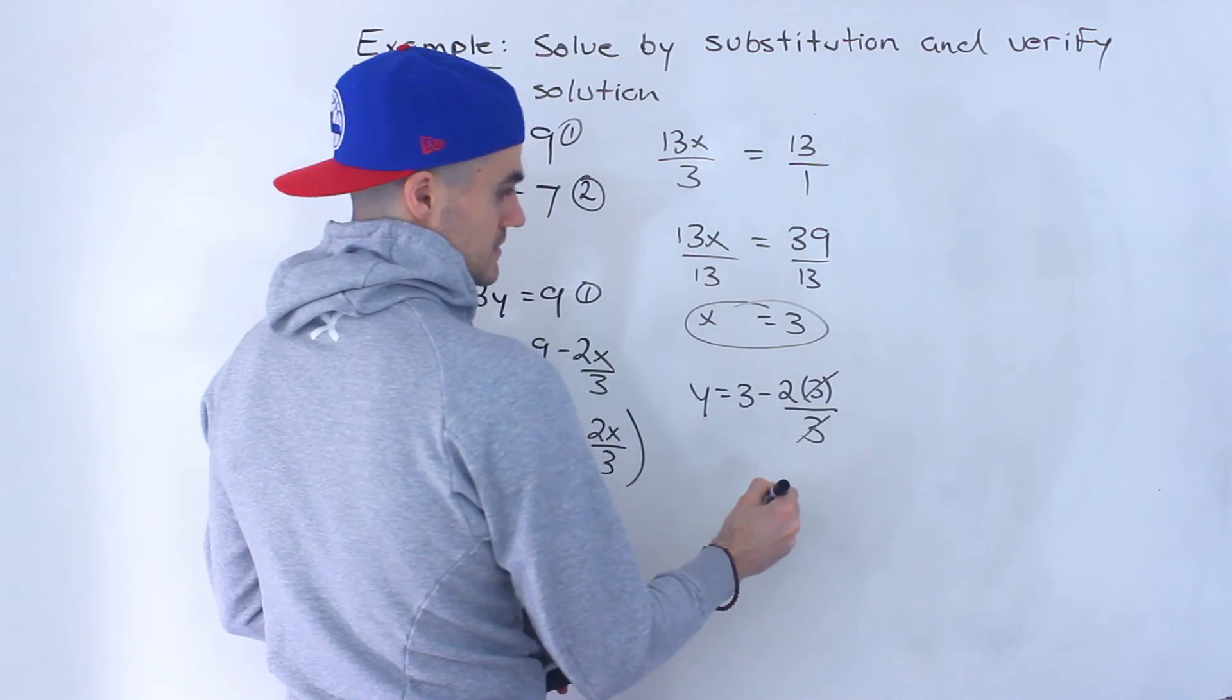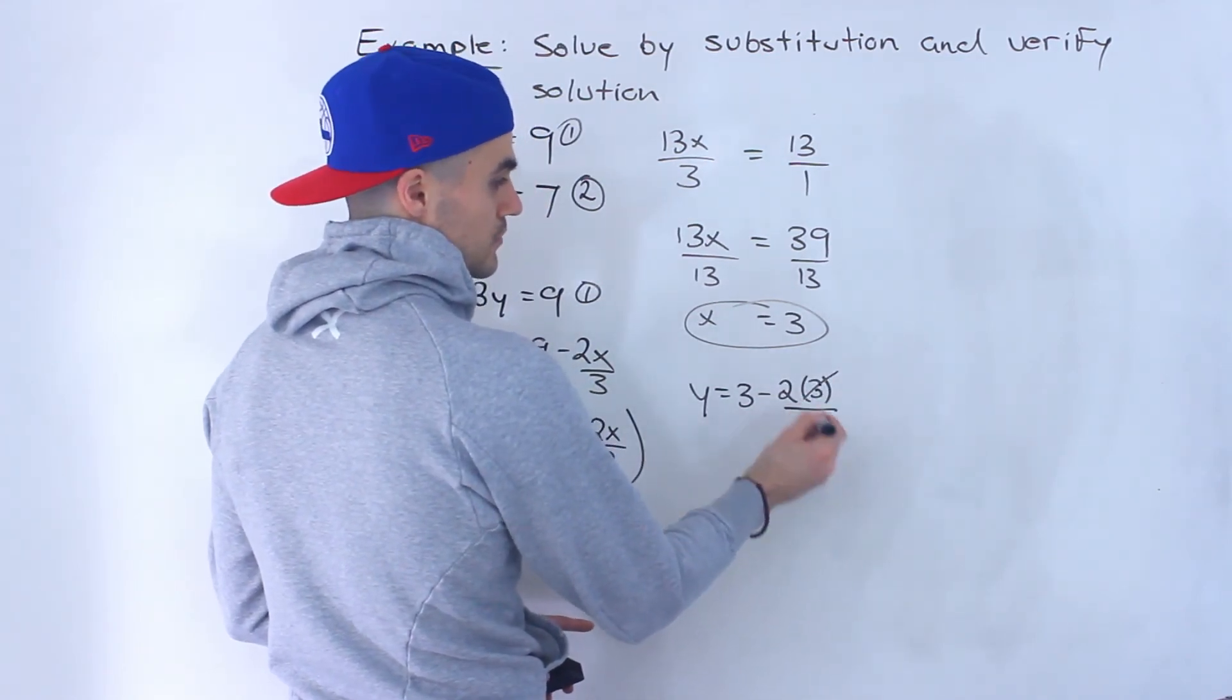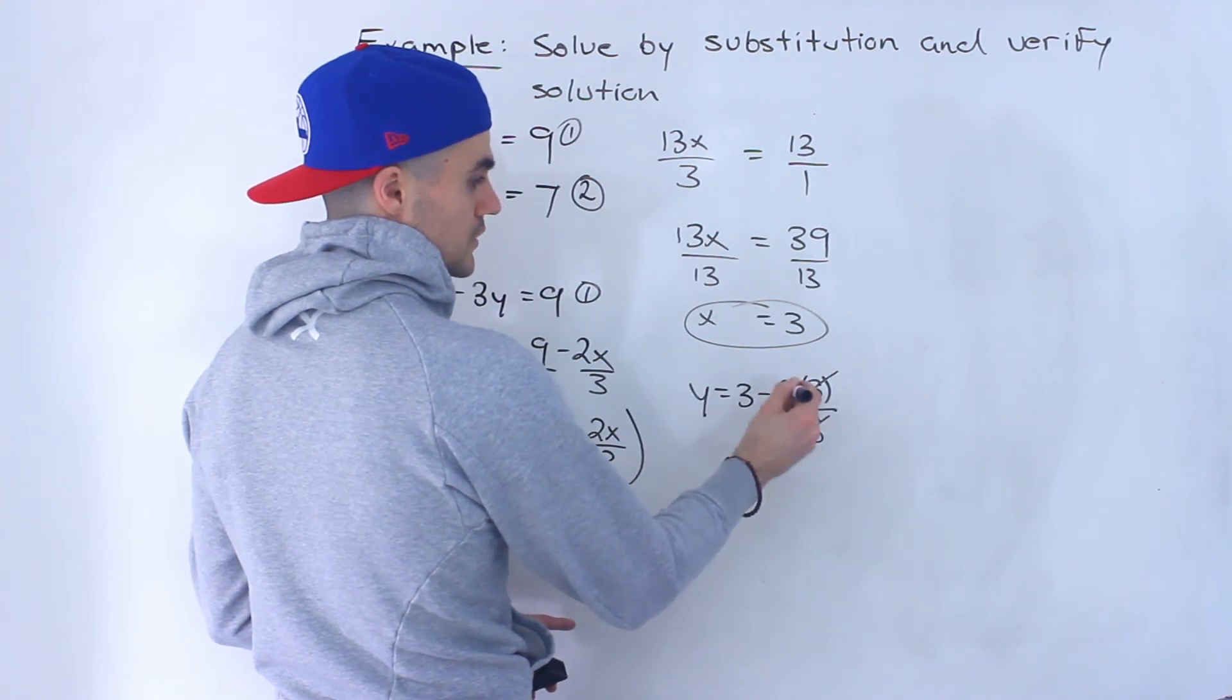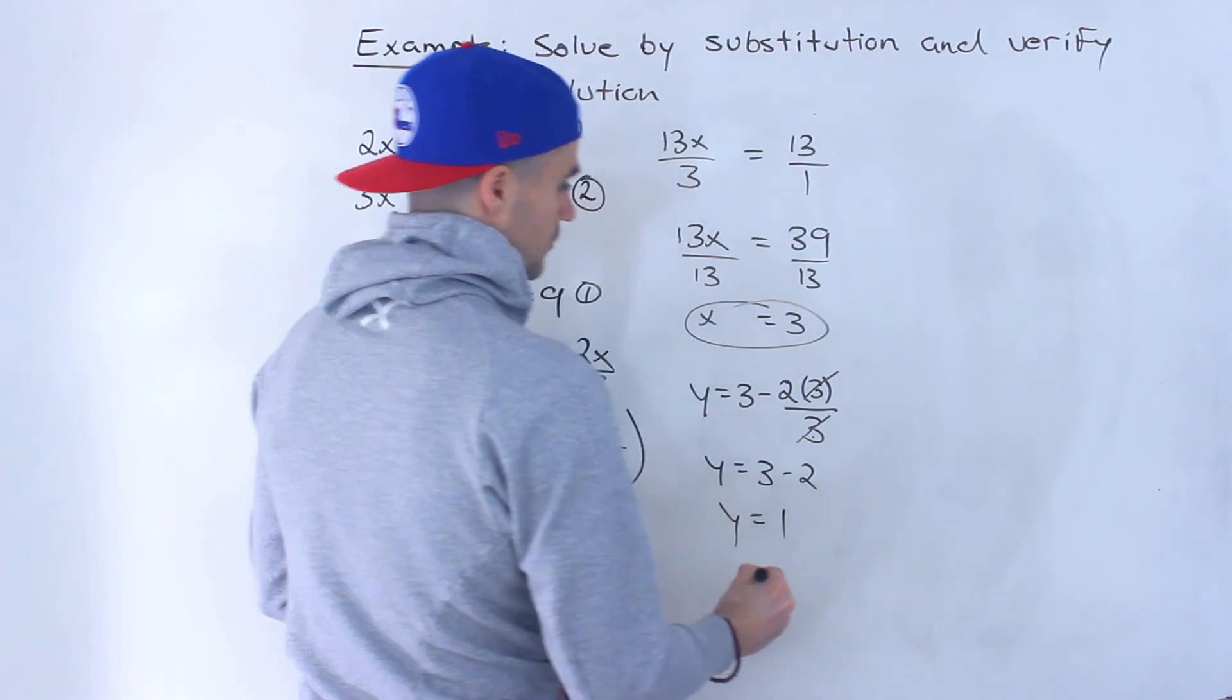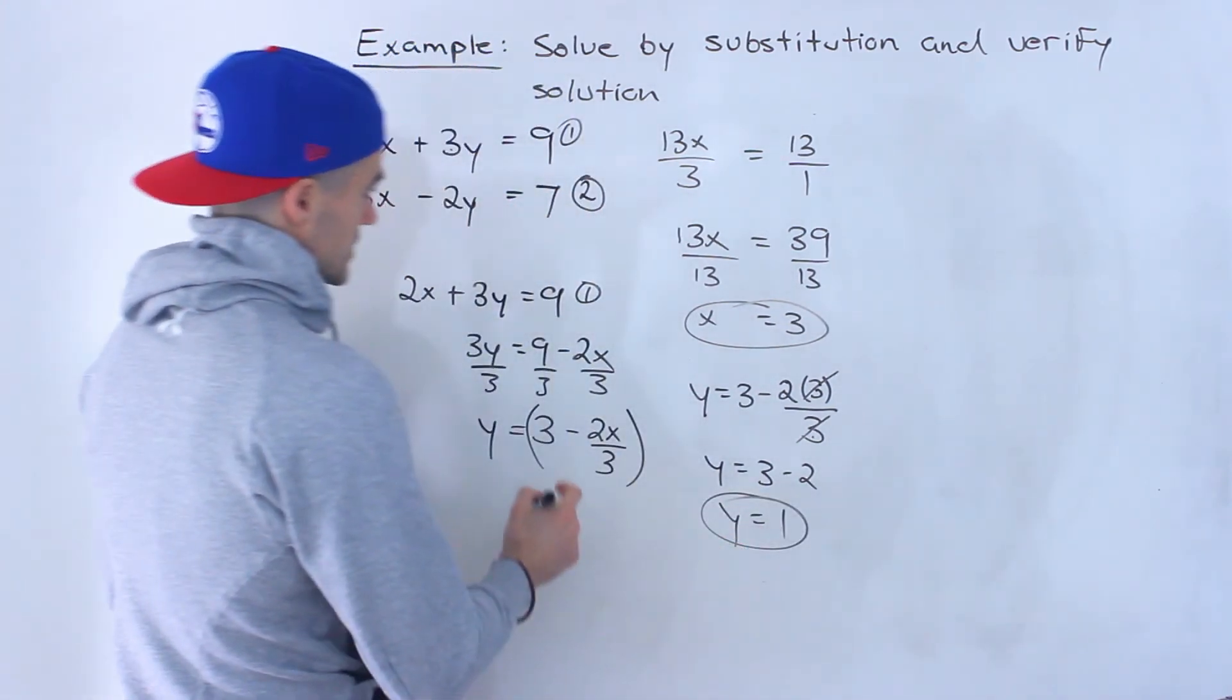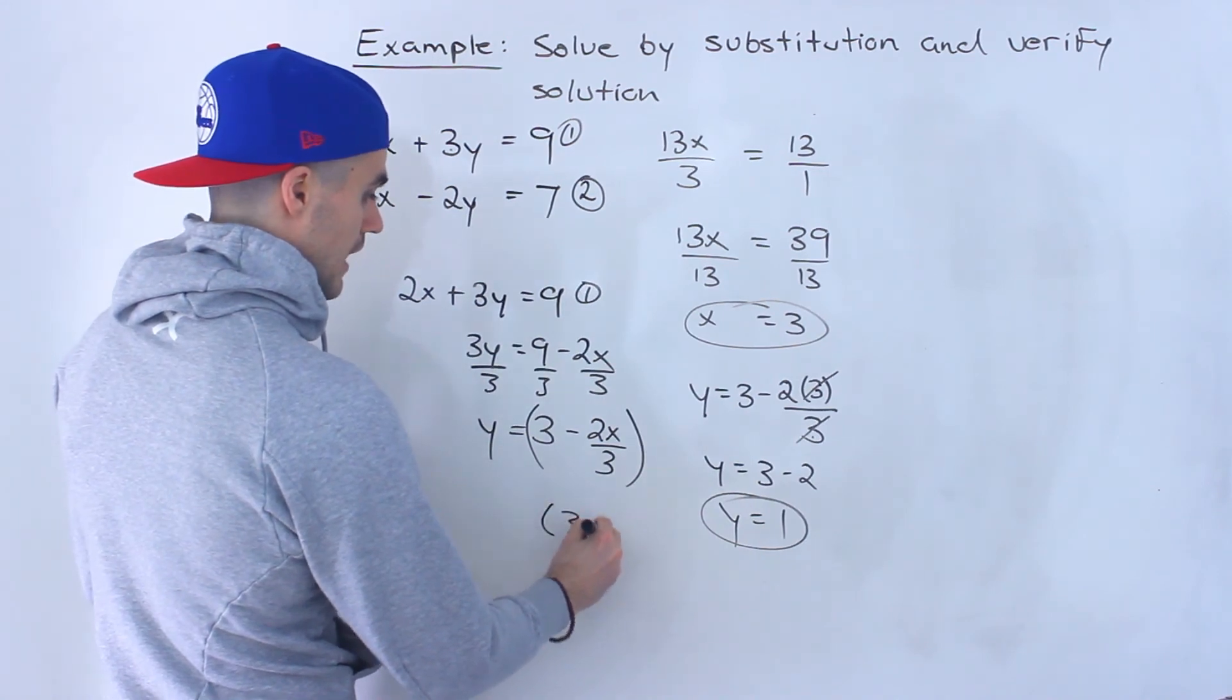Notice these 3s would cancel out. Or you could have 2 times 3, which is 6. 6 divided by 3 gives us 2. So whichever way you do it, 2 is left there. y equals 3 minus 2. y is equal to 1. So the point at which these two lines intersect is 3 and 1.